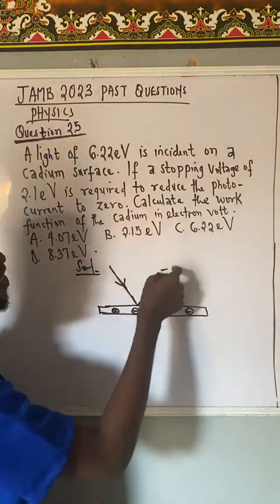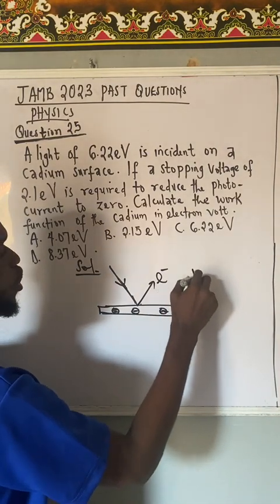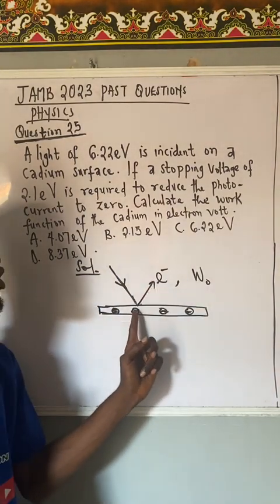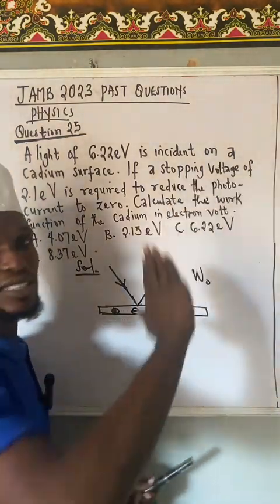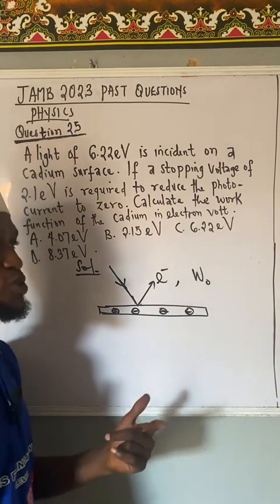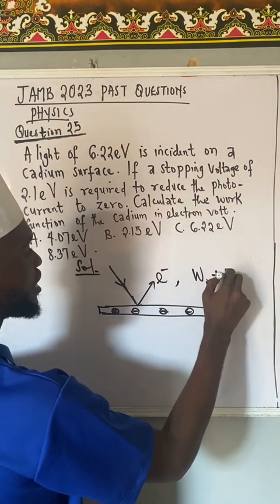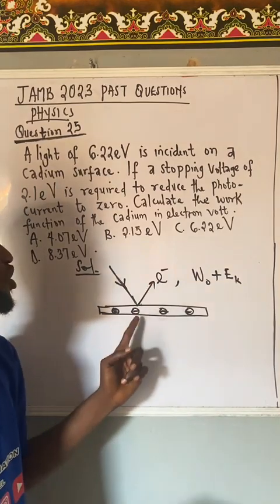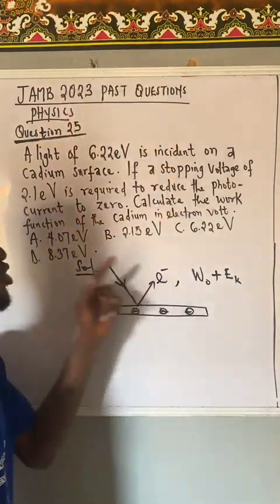The minimum amount of energy needed to remove this electron is known as work function, which is W naught. W naught is the minimum amount of energy that we need to remove electron from the surface. After removing the electron, we can set the electron into motion. To keep something in motion, we need kinetic energy.